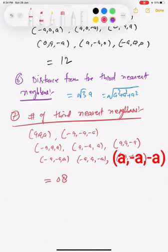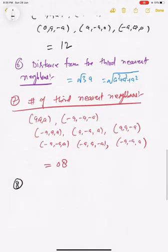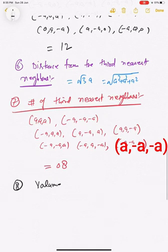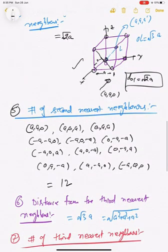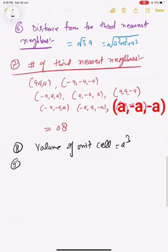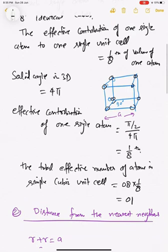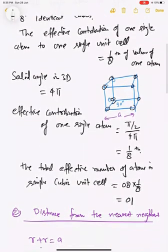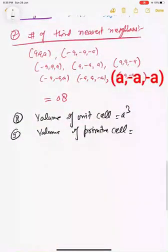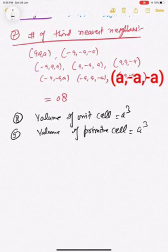The volume of the unit cell is easy to calculate. The unit cell is a cube of side 'a', so the volume is a³. Since a primitive cell by definition has exactly one lattice point, and the effective number of atoms in the simple cubic unit cell is precisely one, this unit cell is also the primitive cell. Therefore the volume of the primitive cell is also a³.